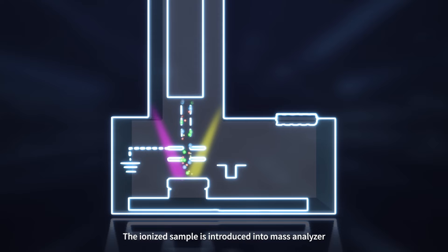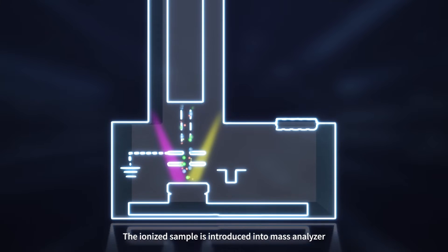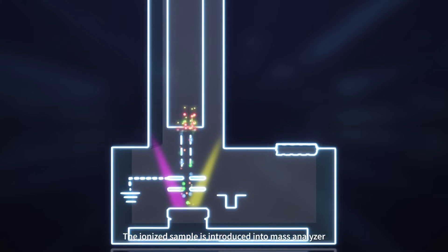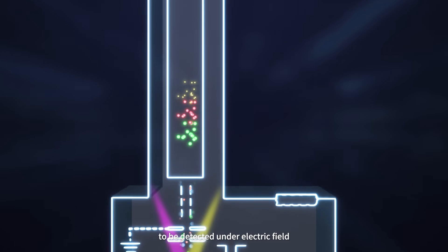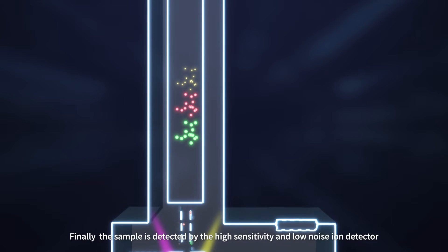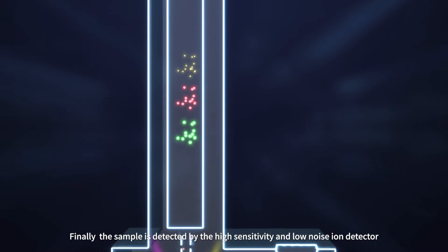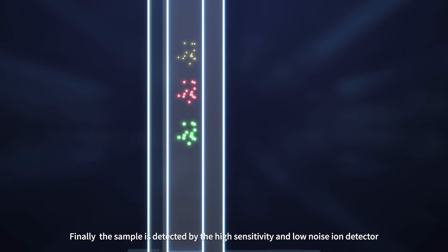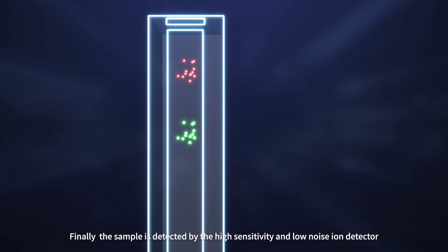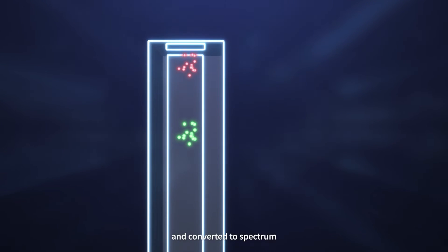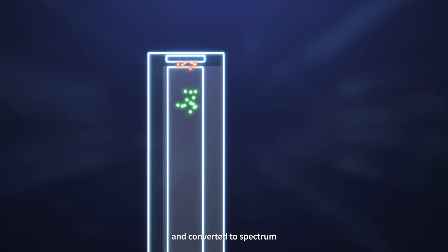The ionized sample is introduced into a mass analyzer to be detected under the electric field. Finally, the sample is detected by the high-sensitivity and low-noise ion detector and converted to a spectrum.